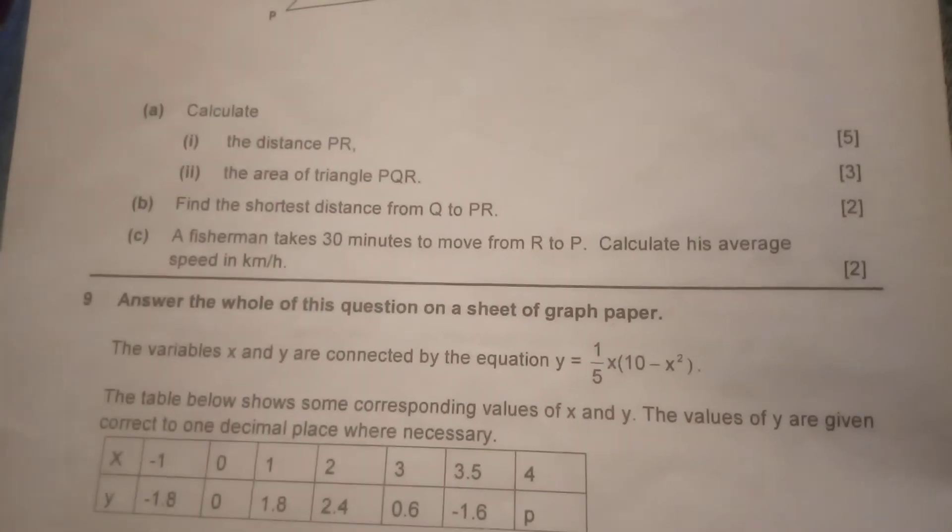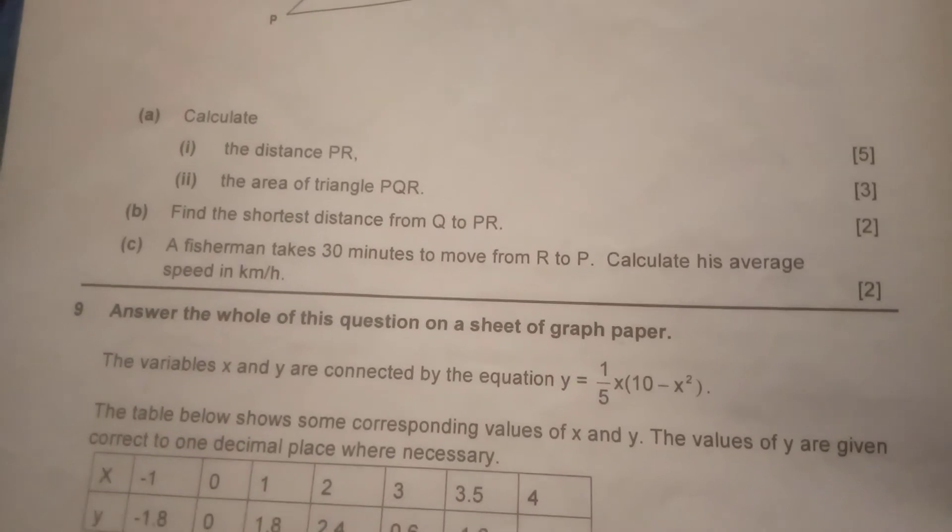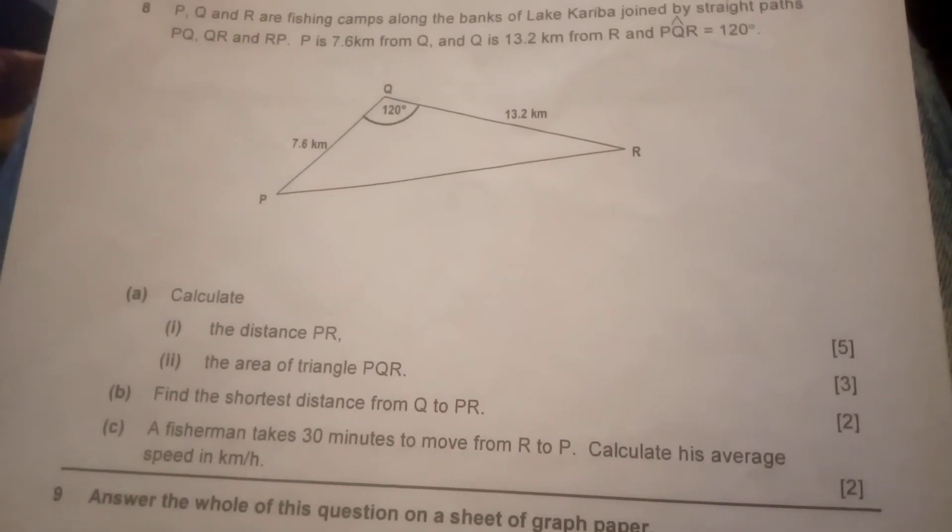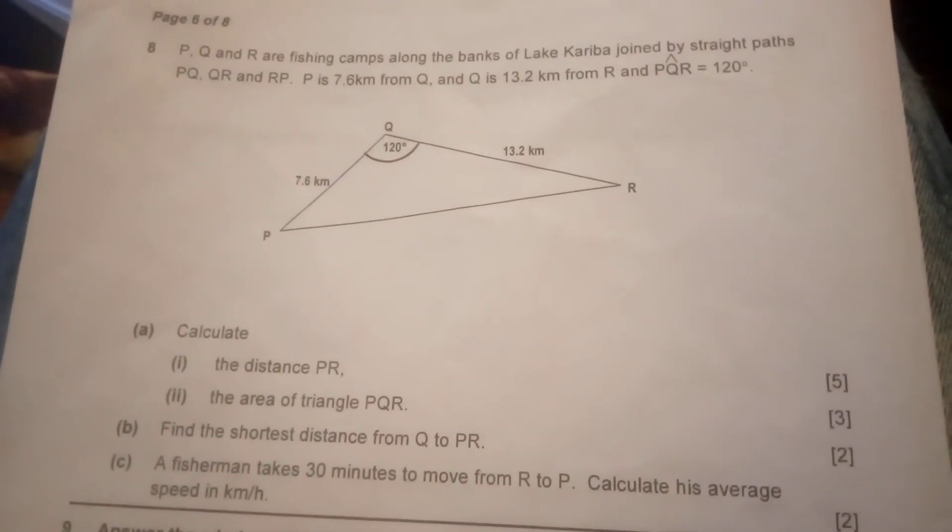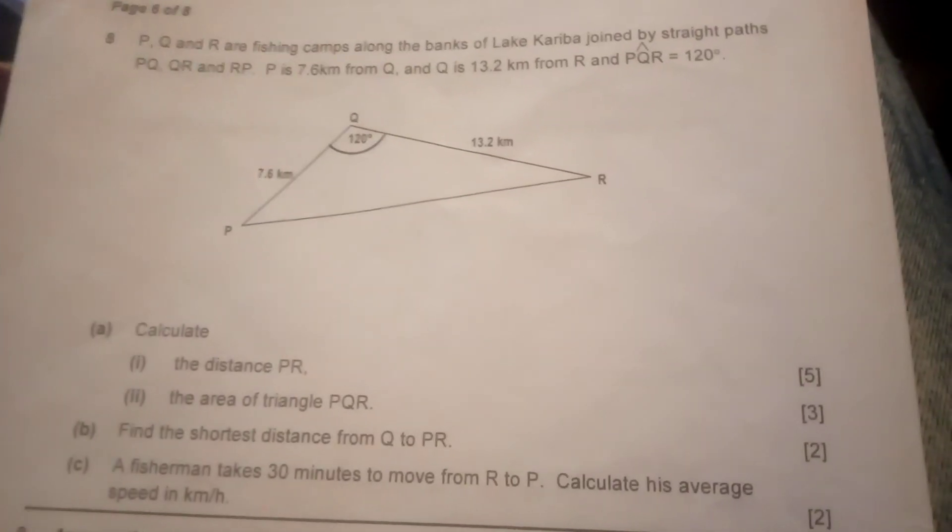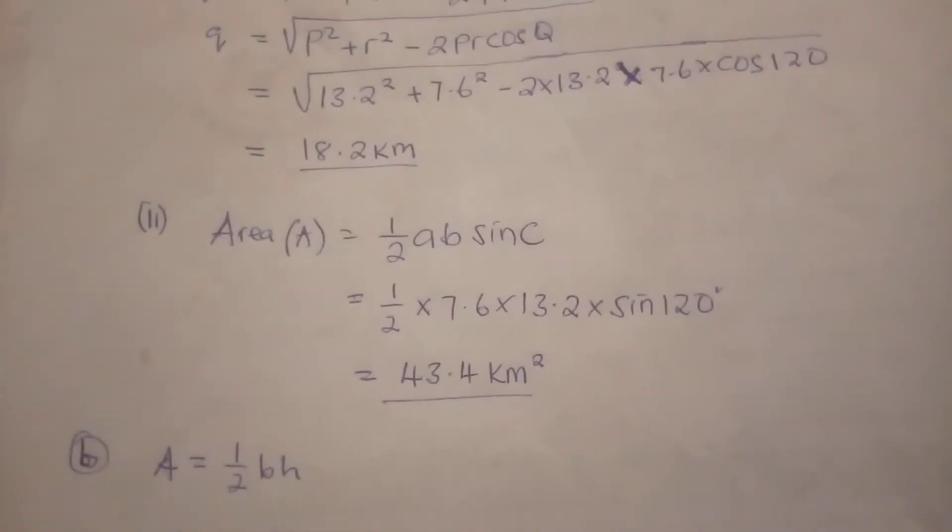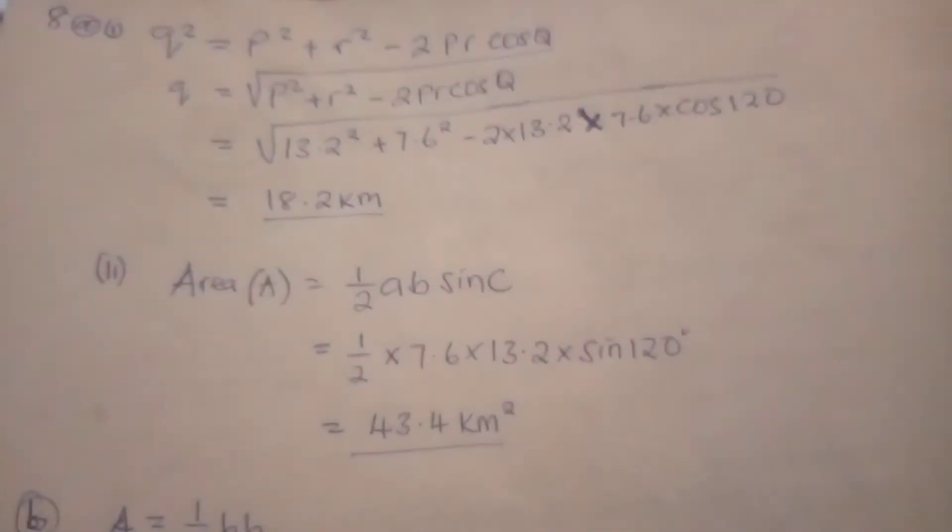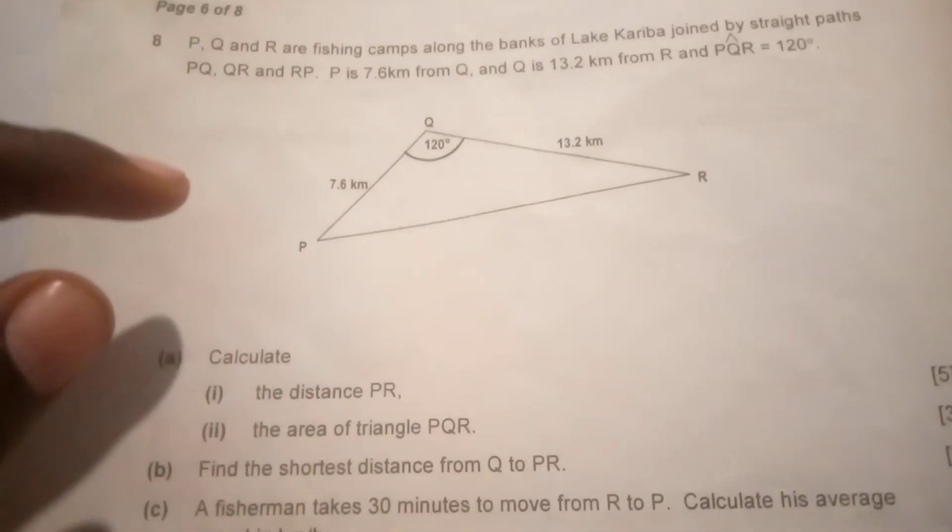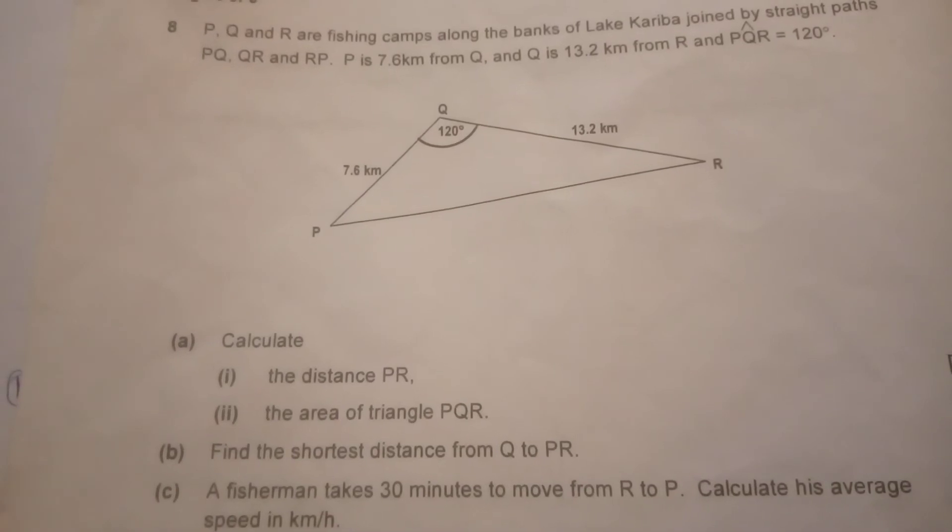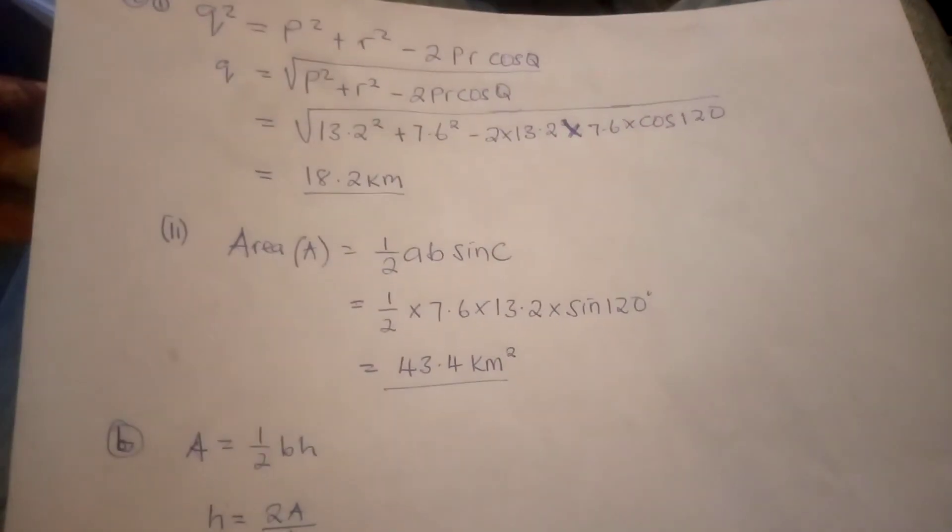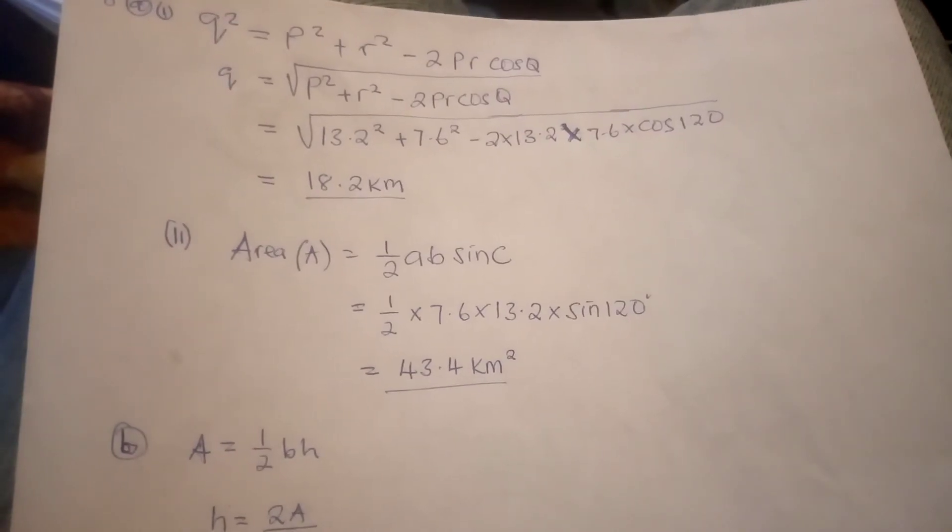We go to the second question: the area of triangle PQR. How are we going to find the area of this non-right-angle triangle? We are going to use the formula: area equals half ab sin C. We are going to use the distances that are separated by an angle there, so we have 7.6 and 13.2. Half of 7.6 times 13.2 times sine 120 equals the area, which equals 43.4 square kilometers.